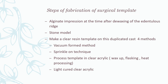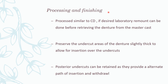Steps to fabricate a surgical template: an alginate impression is taken after de-waxing of the edentulous ridge, and a stone model is poured. Clear resin templates on the duplicated cast are made by four methods: vacuum-form method, sprinkle-on technique, processing the template in clear acrylic, and using light-cure clear acrylic.